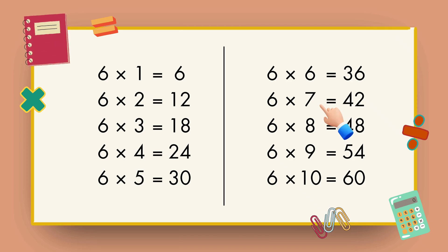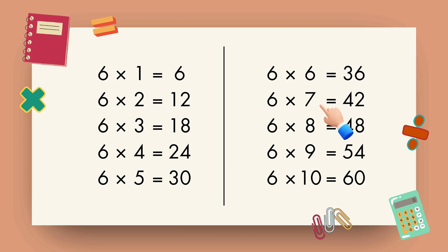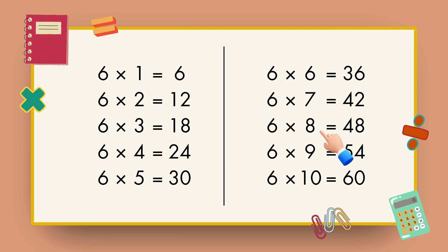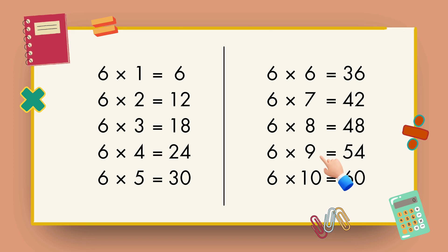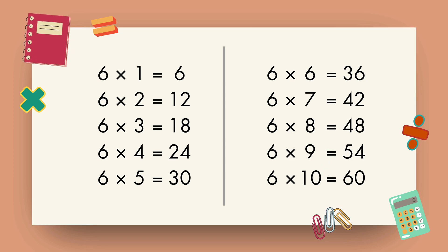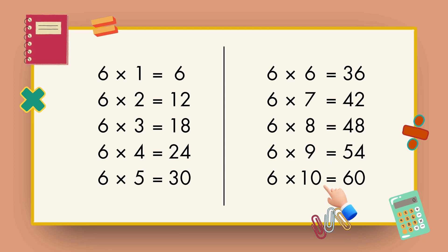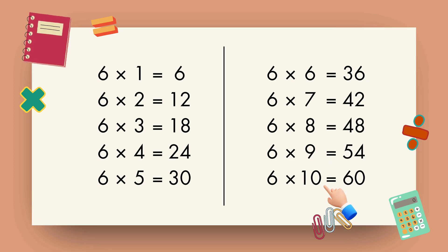6 7s are 42, 6 8s are 48, 6 9s are 54, 6 10s are 60.